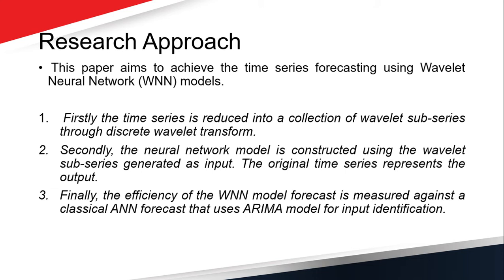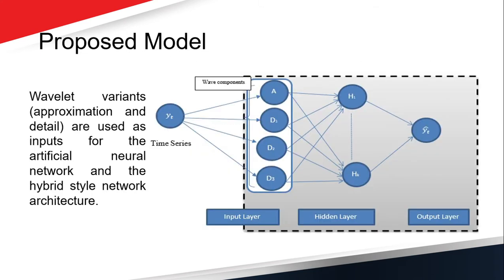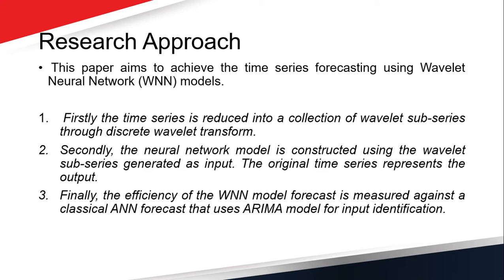The paper aims to achieve time series forecasting using the wavelet neural network model. First, the time period is decomposed into wavelet sub-series through discrete wavelet transform to find different wave components. Then, the neural network model is constructed using the wavelet sub-series as input, with the original time series as output. Finally, the efficiency of the wavelet model forecast is measured against a classical artificial neural network forecast using standard error identification algorithms.